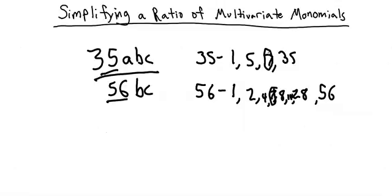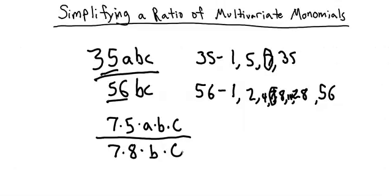Breaking down the fraction, we have 7 times 5 times a times b times c over 7 times 8 times b times c.